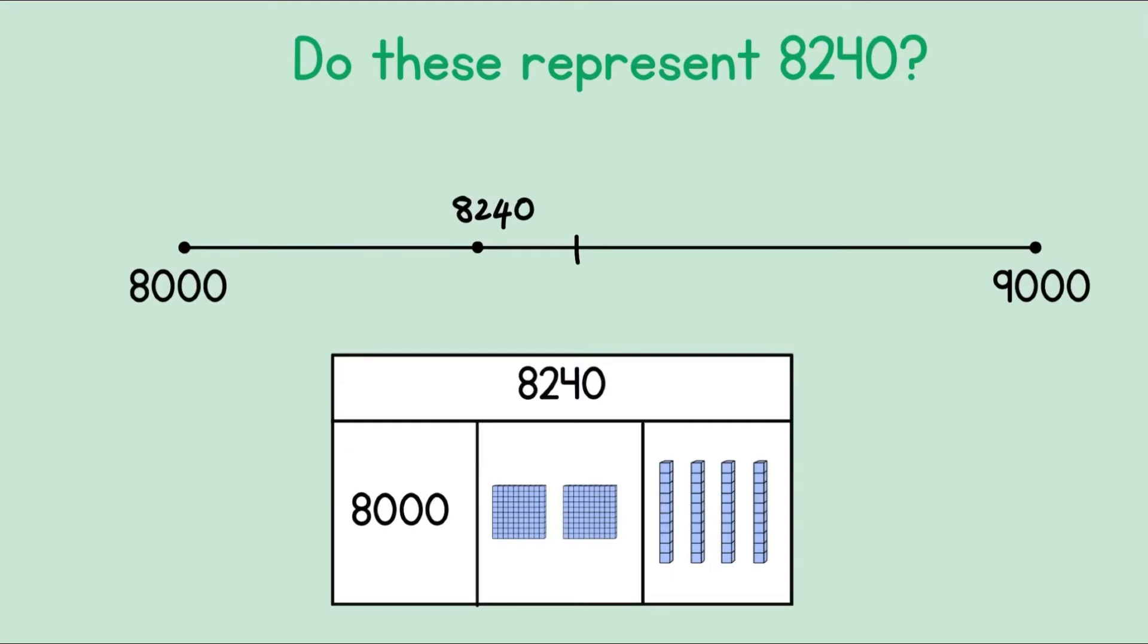Let's look at our next question. Here we have a number line. On one side of the number line we have 8,000 and on the other side we have 9,000. The middle point here represents 8,500.